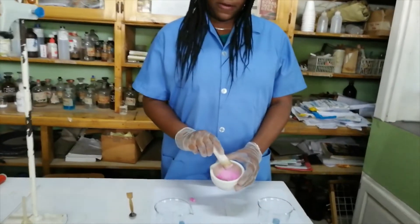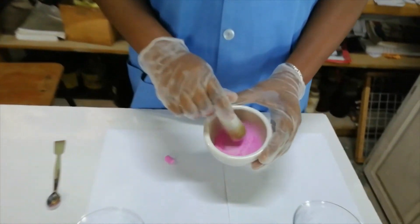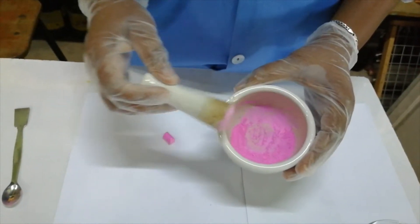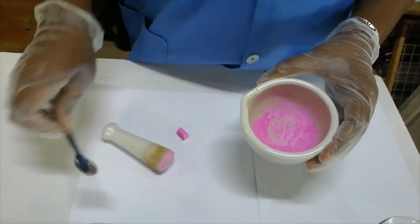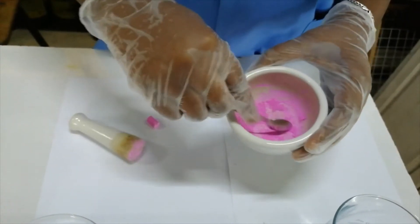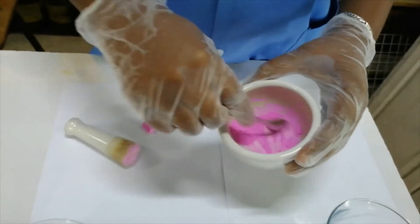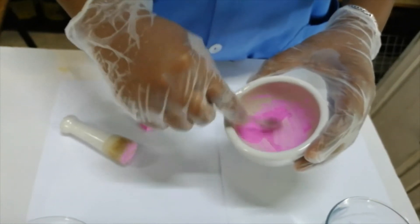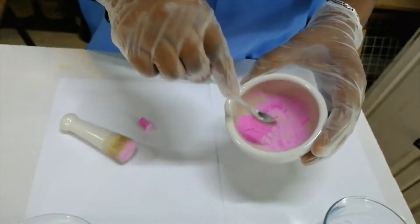We have crushed one half of the chalk, and now we're going to use a spatula to gather all the particles together so that we can transfer it to the glass beaker. Remember that this crushed chalk was basically the same size as this whole piece.